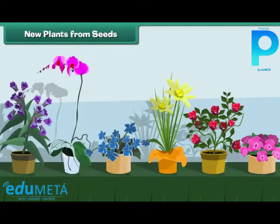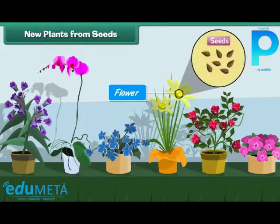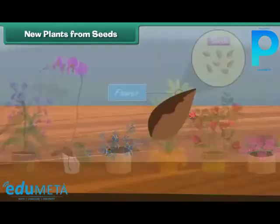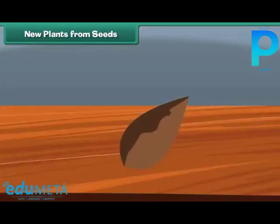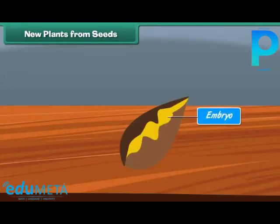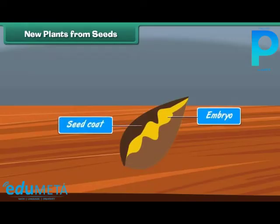New plants from seeds: Flowering plants produce seeds. Each seed produced by a plant has a baby plant inside it, called an embryo. The seed is surrounded by a tough covering called the seed coat, which protects the baby plant and prevents the drying up of the seed.